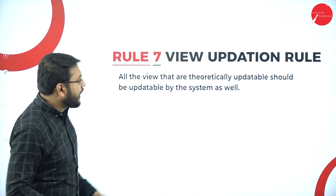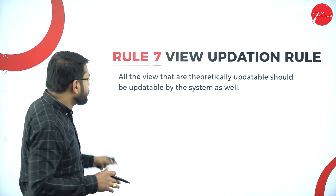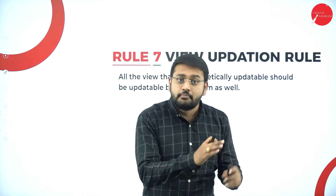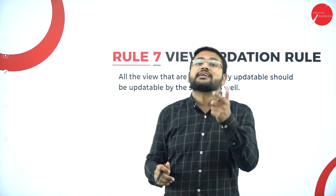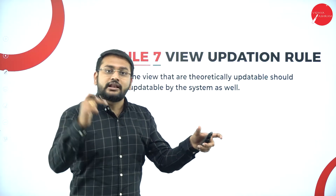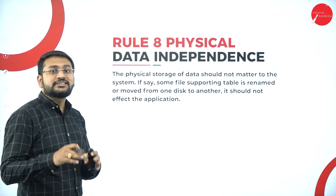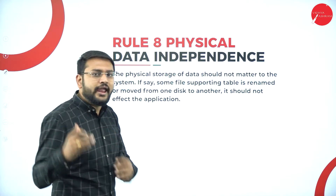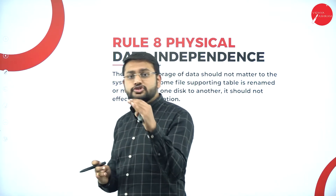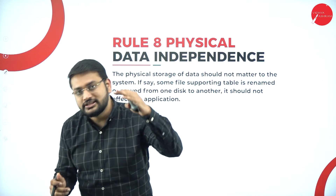Rule Number Seven is the View Updation Rule. All views that are theoretically updatable should also be practically updatable — if you say it can be done theoretically, it should be possible practically as well. Rule Number Eight is Physical Data Independence: if I make any modifications at the physical storage level, that should not affect the logical level.